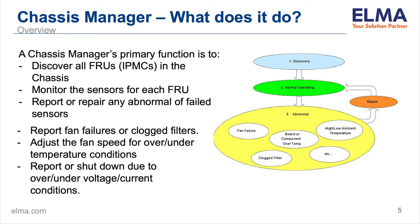This diagram shows the states that take place during the discovery process: a state of normal operation, a state of abnormal conditions, and then what happens during a repair cycle to resolve those conditions.